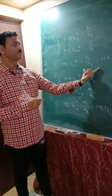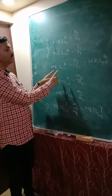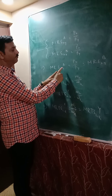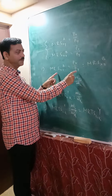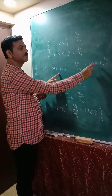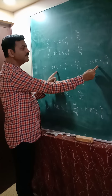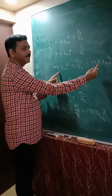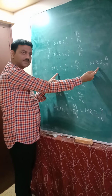From this it follows that MRS of individual A is equal to Px/Py, which equals MRS of individual B. These two conditions together imply that the exchange optimality condition is satisfied.